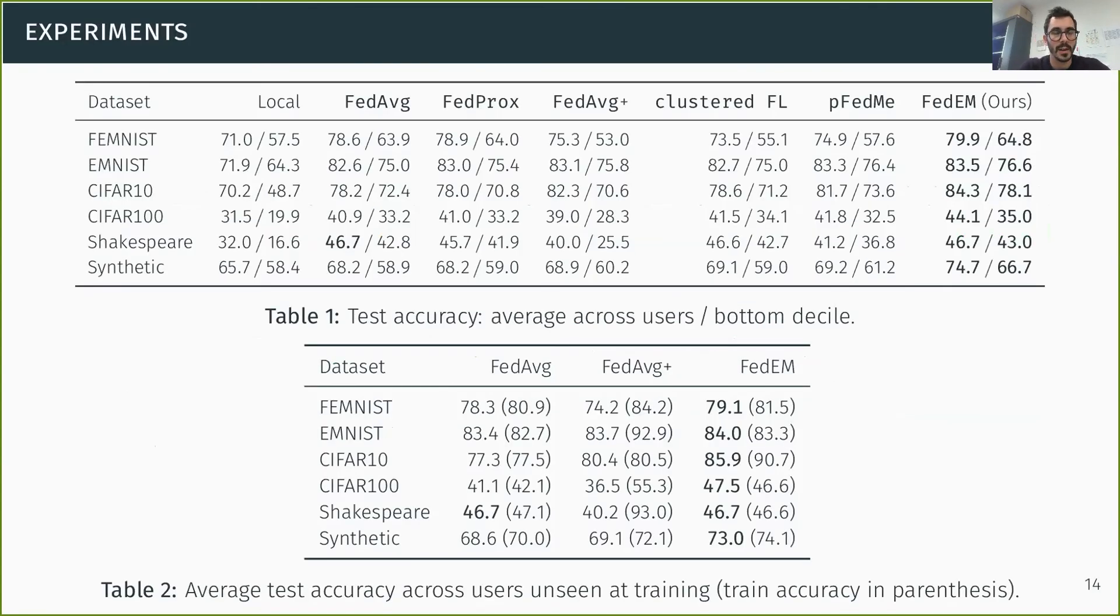Let me now conclude with some experiments. We have evaluated our approach against a number of competitors: purely local models, then federated learning algorithms that learn global models like federated averaging and FedProx, and then personalized federated learning algorithms like federated averaging plus which uses fine tuning, Clustered FL, and also PFED. So what we can see in the first table is that the average test accuracy across users is typically better with our approach, sometimes by a significant margin. And this is not only true about the average, but it's also true about the bottom decile of the accuracy, showing that for the worst users, we are also doing better than competitors, which is nice in terms of fairness.